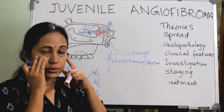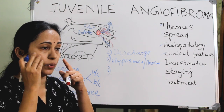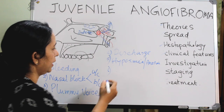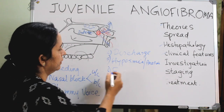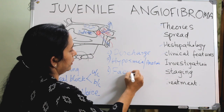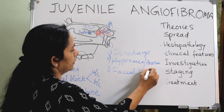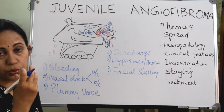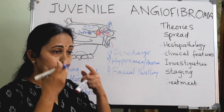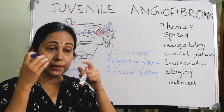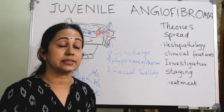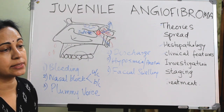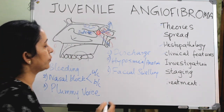If the tumor extends through the infratemporal fossa into the cheek area, there can be facial swelling. If it involves the ethmoids, there can be flattening of the nasal bridge, widening of the intercanthal distance, and proptosis, leading to the characteristic 'frog face' appearance.